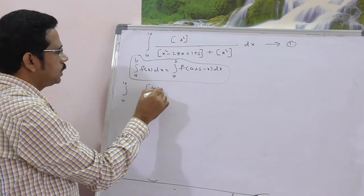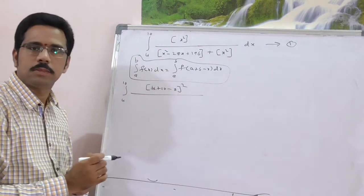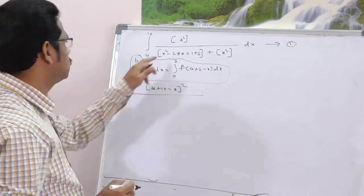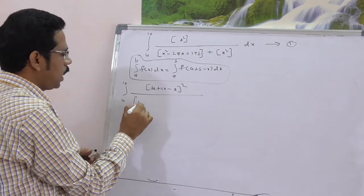a is here 4, 4 plus 10 minus x whole square. Simply substitute x as 4 plus 10 minus x, then you get the answer. x square again.